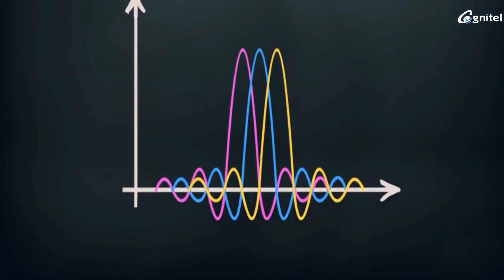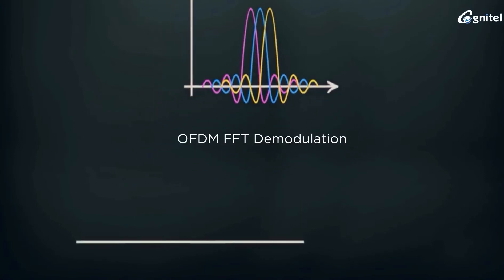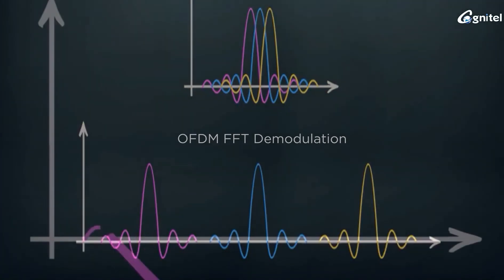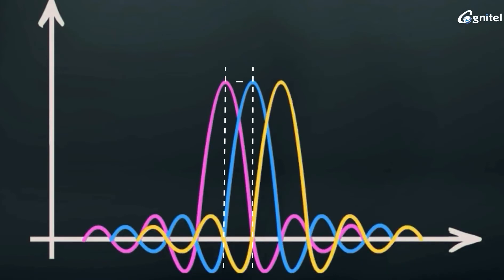Demultiplexers on the receiver side would separate these signals applying the same technique. Frequency separation or spacing between the peaks of adjacent signals is known as subcarrier spacing.